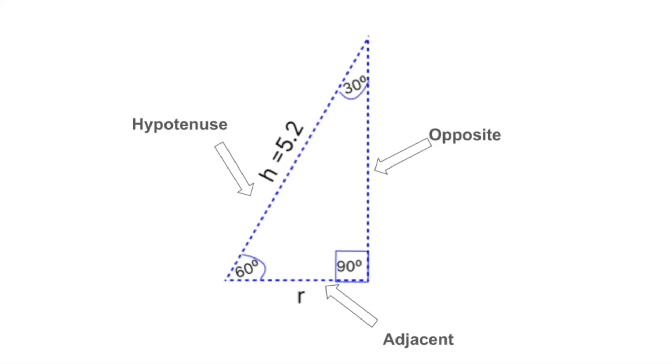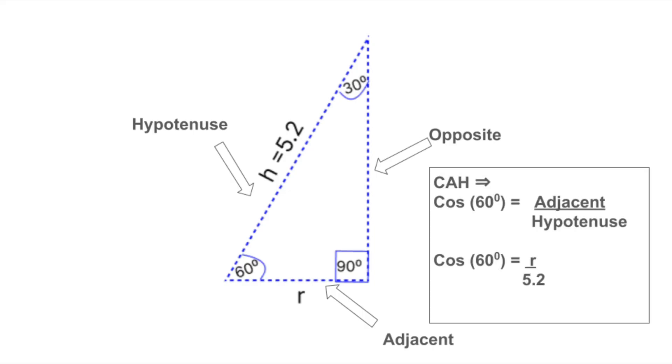Let's look closely at this triangle again. We're using the 60-degree angle. In that setup, the adjacent side is the radius R. The hypotenuse is the height, which is about 5.2 units. That gives us this equation. Cosine of 60 degrees is equal to R divided by 5.2.